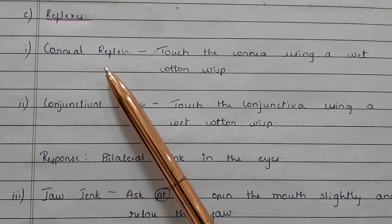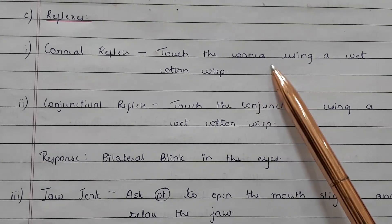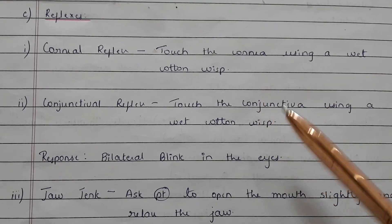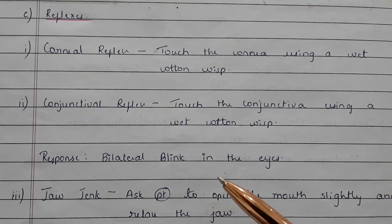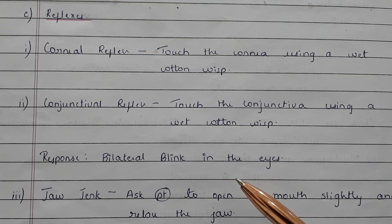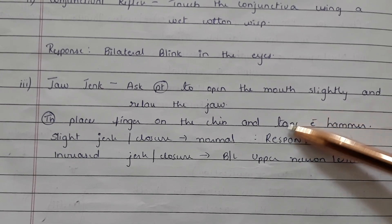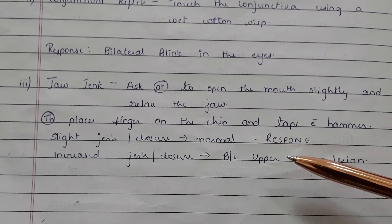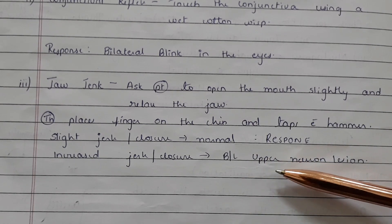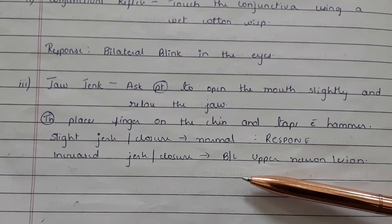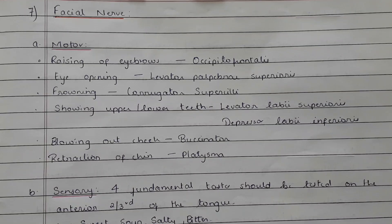Under reflexes, we have the corneal reflex, conjunctival reflex, and jaw jerk. For the corneal reflex, touch the patient's cornea using a wet cotton wisp. For the conjunctival reflex, touch the patient's conjunctiva using a wet cotton wisp — the response seen is bilateral blink. For the jaw jerk, ask the patient to open the mouth slightly and relax the jaw; the therapist places a finger on the chin and taps with a hammer. A slight jerk or closure is a normal response. Increased jerk or jaw closure indicates a bilateral upper motor neuron lesion.